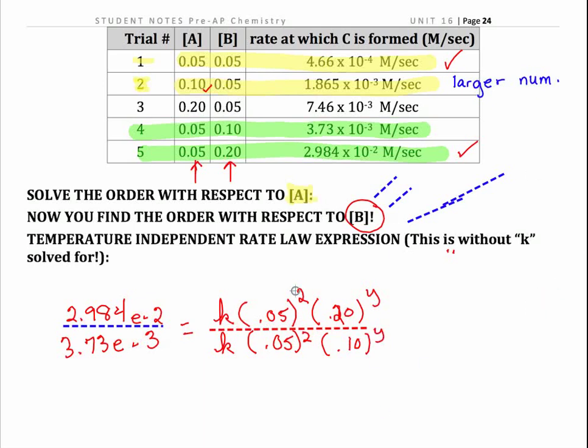Now we can cancel some of these and simplify our math. K's cancel because we didn't change temperature. Now fortunately A cancels. But if it didn't, no big deal because we know it's second order. We could have just done a little bit more algebra. If this didn't cancel, we could have done more algebra and then done some cross multiplying. But fortunately it does cancel. And when we do this algebra, you get 8 is equal to 2 to the X.